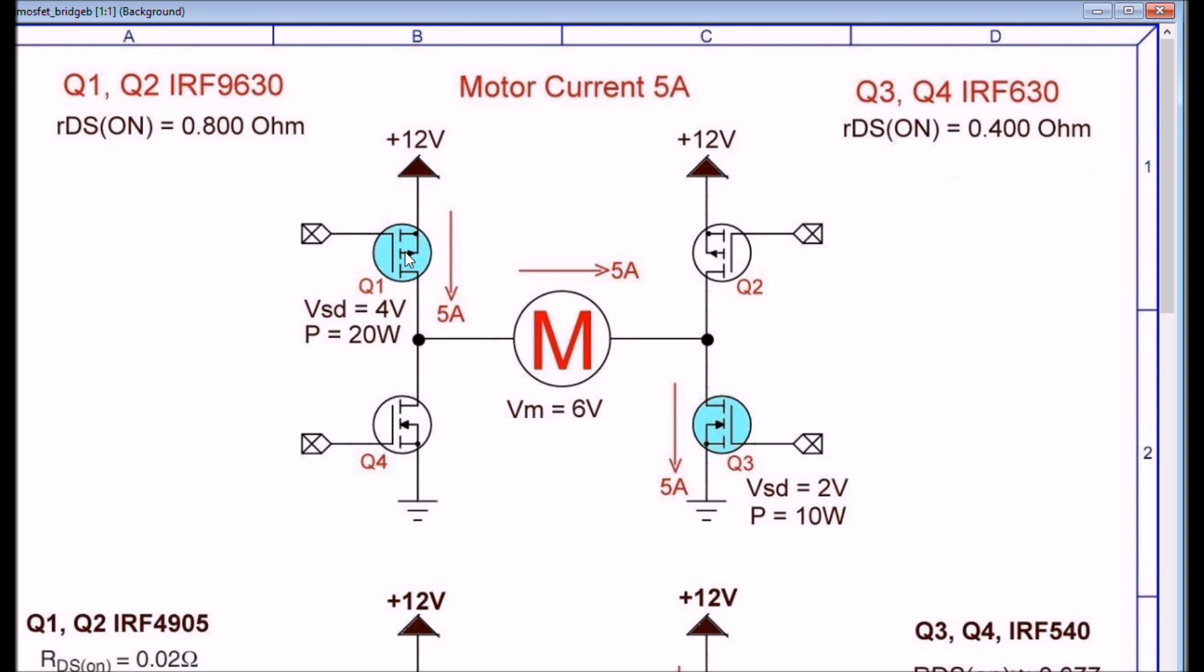And of course the p-channel is dissipating twice the power of the N-channel, is going to get hot even at 12 volts. And to make matters worse, as the transistors heat up the resistance increases. From my measurements, because I let them go ahead and heat up, the voltage drop kept climbing which tells me the resistance keeps increasing with temperature.